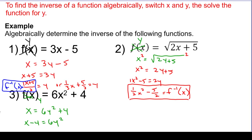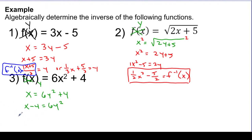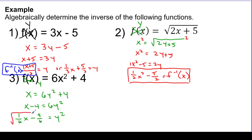And I'm going to divide both sides by 6. So it's going to say 1 sixth x minus 4 sixths, which we can simplify — that's going to be 2 thirds. That equals y squared. And then to get y alone, I'm going to square root both sides.